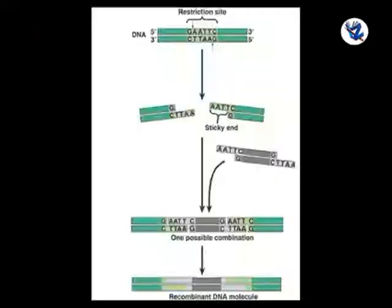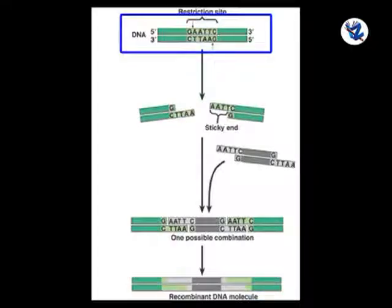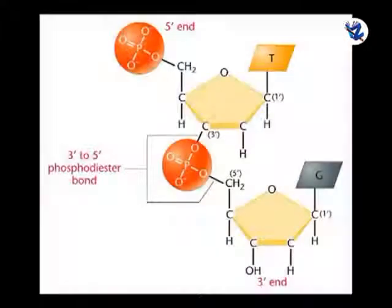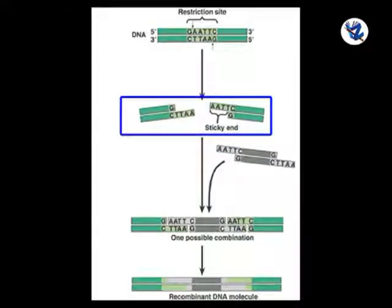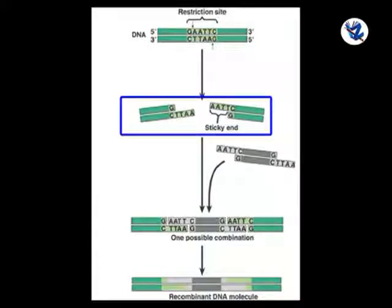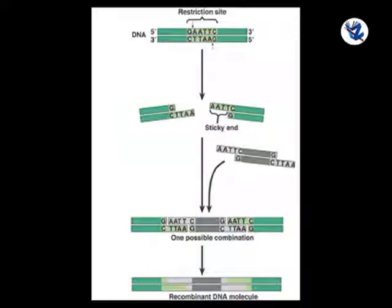Cleavage pattern: in recombinant DNA technology, specific restriction endonucleases — particularly type 2 — recognize a specific base pair sequence in DNA called a restriction site and cleave the DNA within the sequence by hydrolyzing the phosphodiester bonds, retaining symmetry and isolating a particular gene so that the double-stranded restriction fragments have single-stranded ends. Many cuts are made by one restriction enzyme because of the chances of repetition of these sequences in a long DNA molecule.